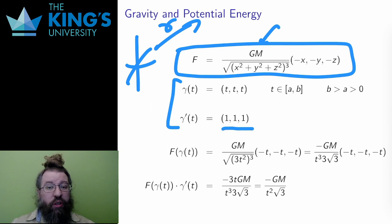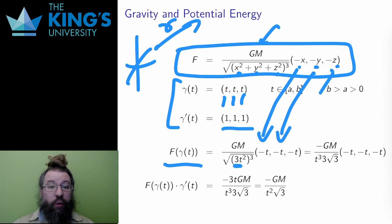The evaluation of F along γ replaces x, y, and z, all with t, since each component of the curve is just t. The denominator has t² + t² + t², which is 3t², inside the square root and cubed. Each -x, -y, -z are -t. Well, then I can pull the t² out of the root, and just get t³ in the denominator.